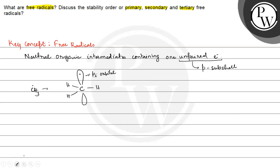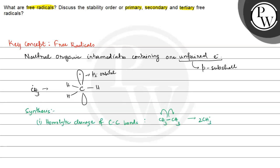Now let us talk about the synthesis of these free radicals. Synthesis can happen through homolytic cleavage of carbon-carbon bonds. For example, if we take ethane — CH3 single bond CH3 — and do the homolytic cleavage, then we will get two CH3 free radicals.